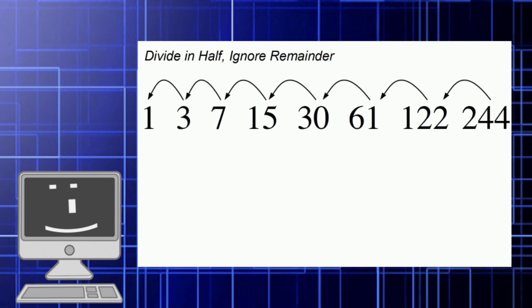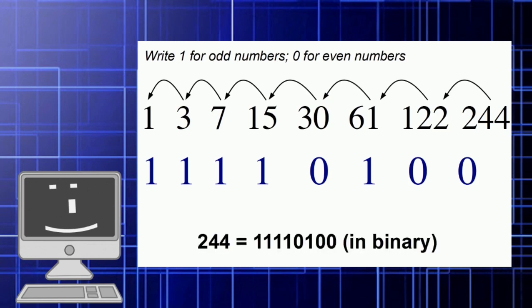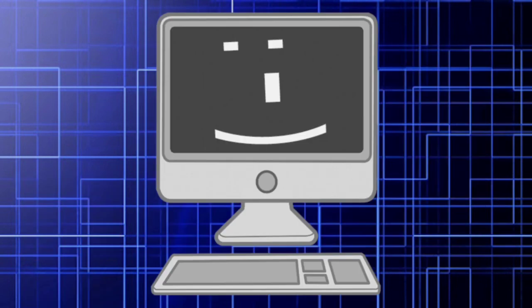Now for the last step, we will write 1 below the number if it is odd and 0 if it is even. The resulting line of zeros and ones is the binary representation of the number 244. I hope you learned something from this video, even though you might not use this in real life situations.